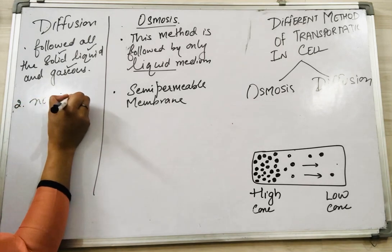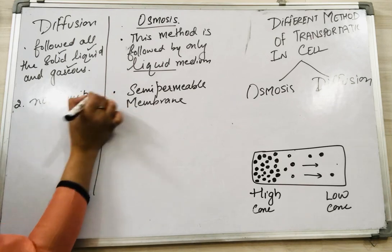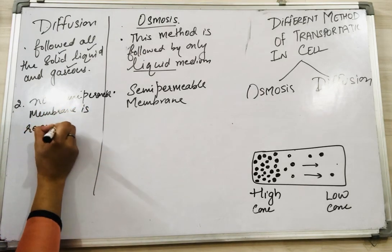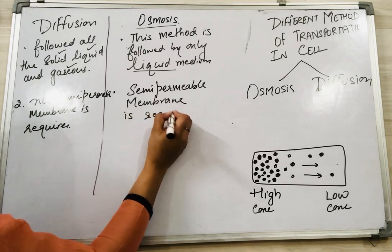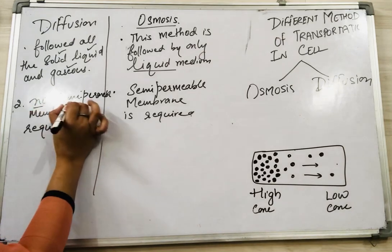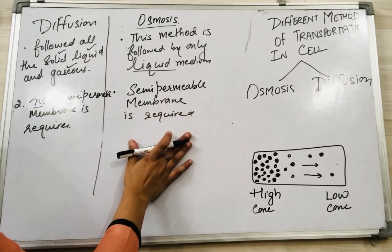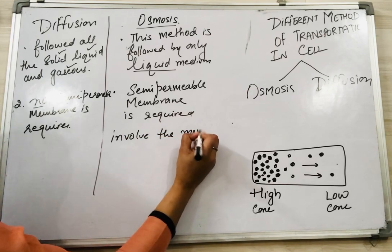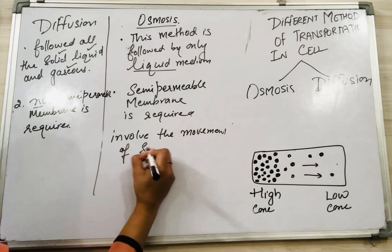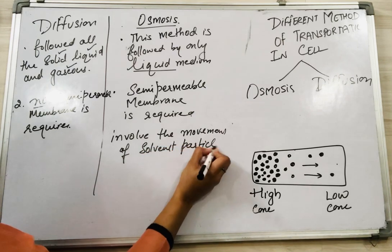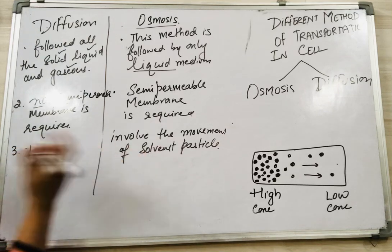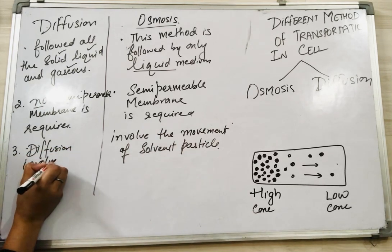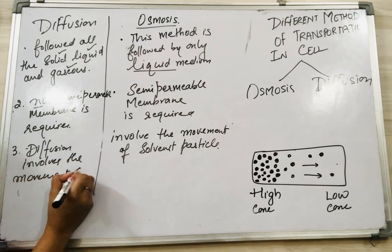No semi-permeable membrane is required in the case of diffusion, whereas a semi-permeable membrane is required for osmosis. Osmosis involves the movement of solvent particles, whereas diffusion involves the movement of solute particles.